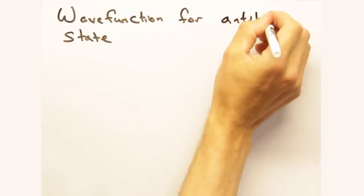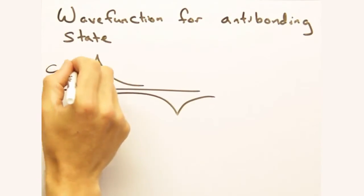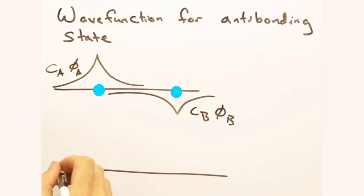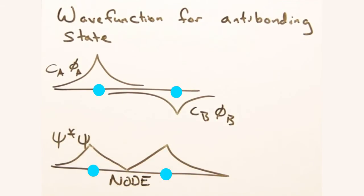Now let's look at the anti-bonding case. Okay. Ah, the wave function here has a positive part and a negative part. So when you take psi star psi, you get a truly zero value for the electron density between the two atoms.